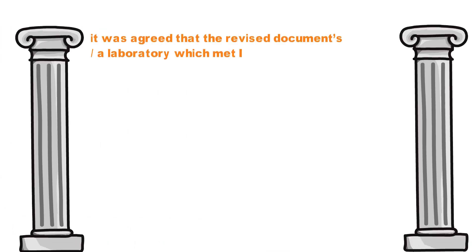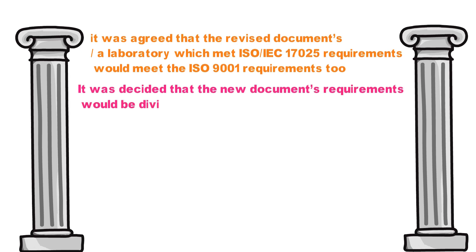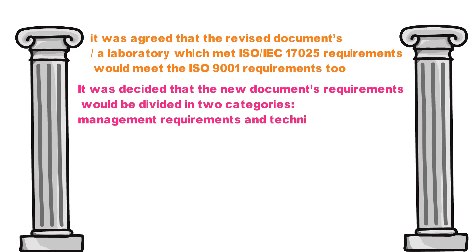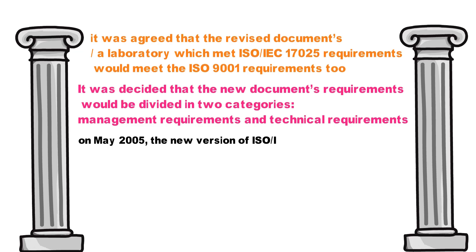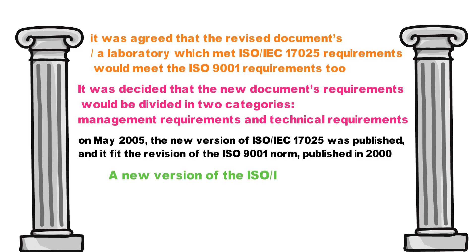It was agreed that the revised documents — laboratories which meet the ISO 17025 requirements would meet the ISO 9001 requirements too. It was decided that the new document requirements would be divided into two categories: management requirements and technical requirements. On May 2005, the new version of ISO 17025 was published and it fit the version of ISO 9001 norm which was published in 2000.